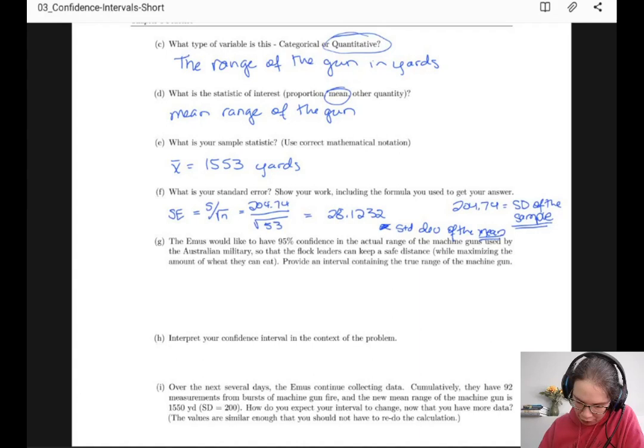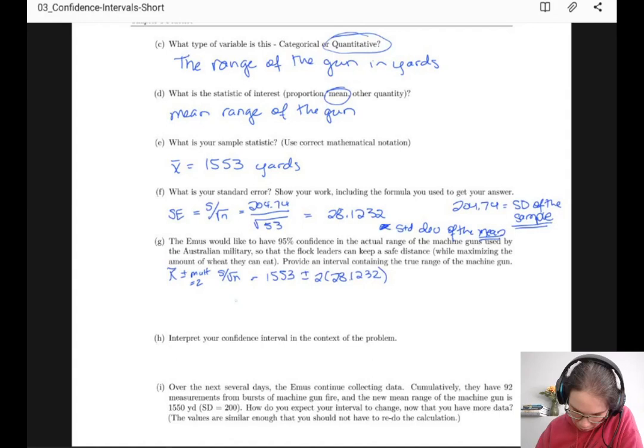Here I'm going to use a 2SD interval. You can obviously go into the book and figure out your t statistic for your interval if you want to do that. 53 is on the edge of what I would say it probably would actually matter, but 2 is good. So our formula is x-bar plus or minus multiplier, which we've already said is 2 times s over square root of n. So that's 1553 plus or minus 2 times 28.1232.